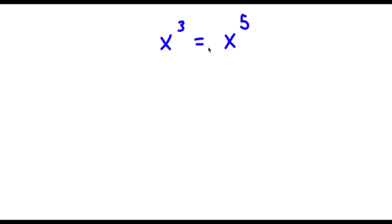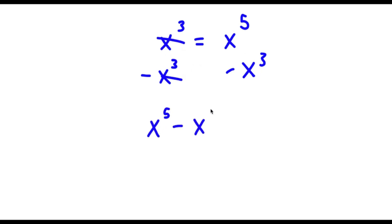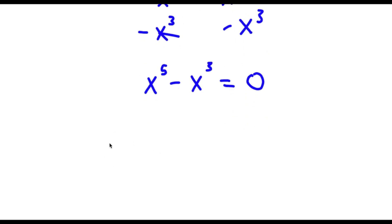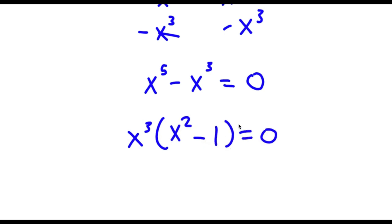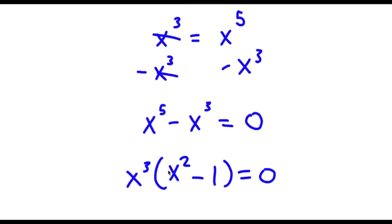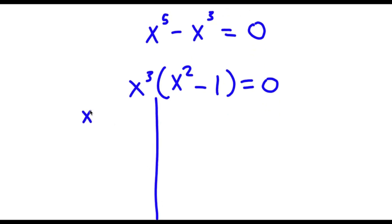Now I have x to the power of 3 is equal to x to the power of 5. The first thing I'm going to do is subtract x to the power of 3 from both sides. These cancel out and I'm left with x to the power of 5 minus x to the power of 3 is equal to 0. Now I'm going to factor out x to the power of 3, giving me x cubed times x squared minus 1 is equal to 0. This gives me two equations: x cubed equals 0 and x squared minus 1 equals 0.